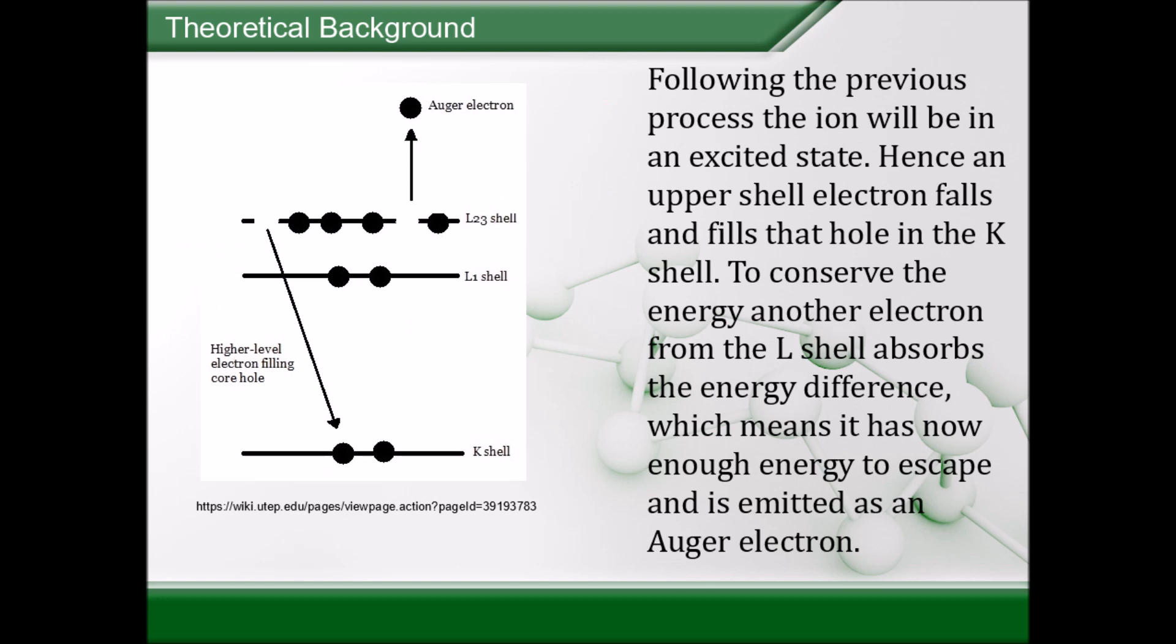Besides the electrons ejected by the X-ray beam, we detect Auger electrons as well. So what are Auger electrons? Following the photoelectron process, we will have an excited ion. And one of the ways to relax is by having an upper shell electron fall and fill that hole created by the X-ray beam and have the Auger electron emitted conserving energy.